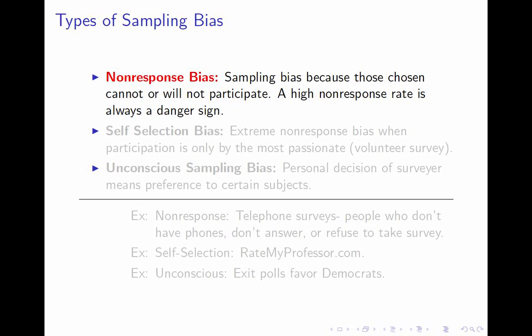It's really important that you understand sampling bias and can think up plausible possibilities for sampling bias. Much less important is knowing the names of some special cases. Non-response bias is sampling bias that comes because of individuals who cannot or choose not to participate. Non-response in itself is not a bias — to be a bias, you would have to argue how those who do not respond differ in some direction on a parameter.